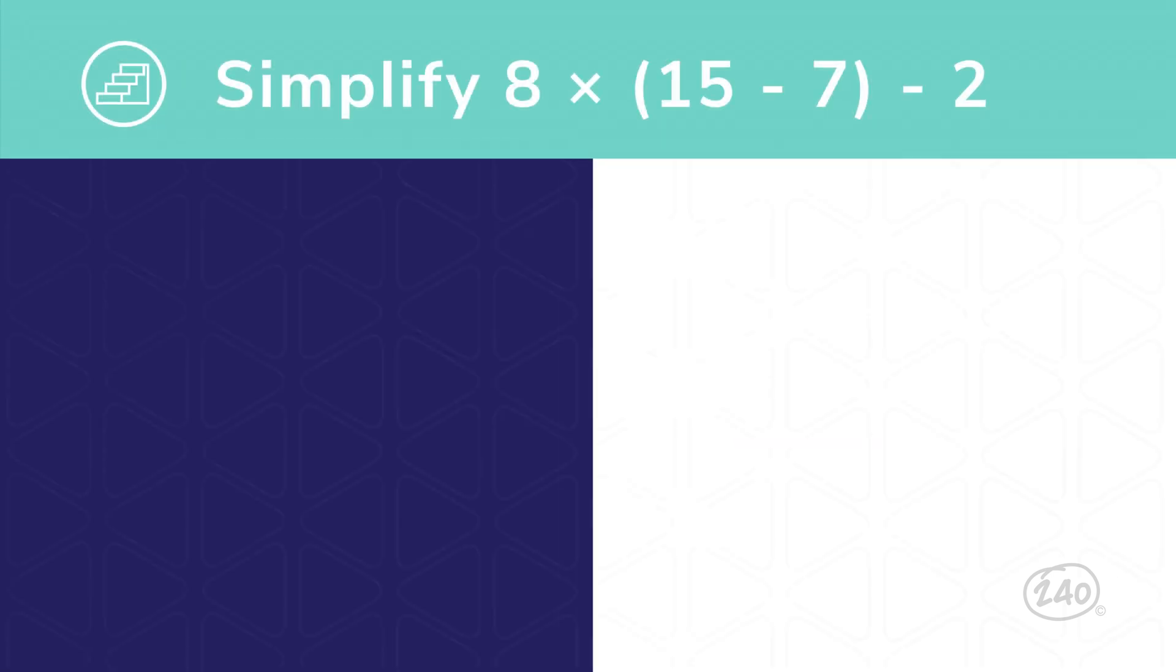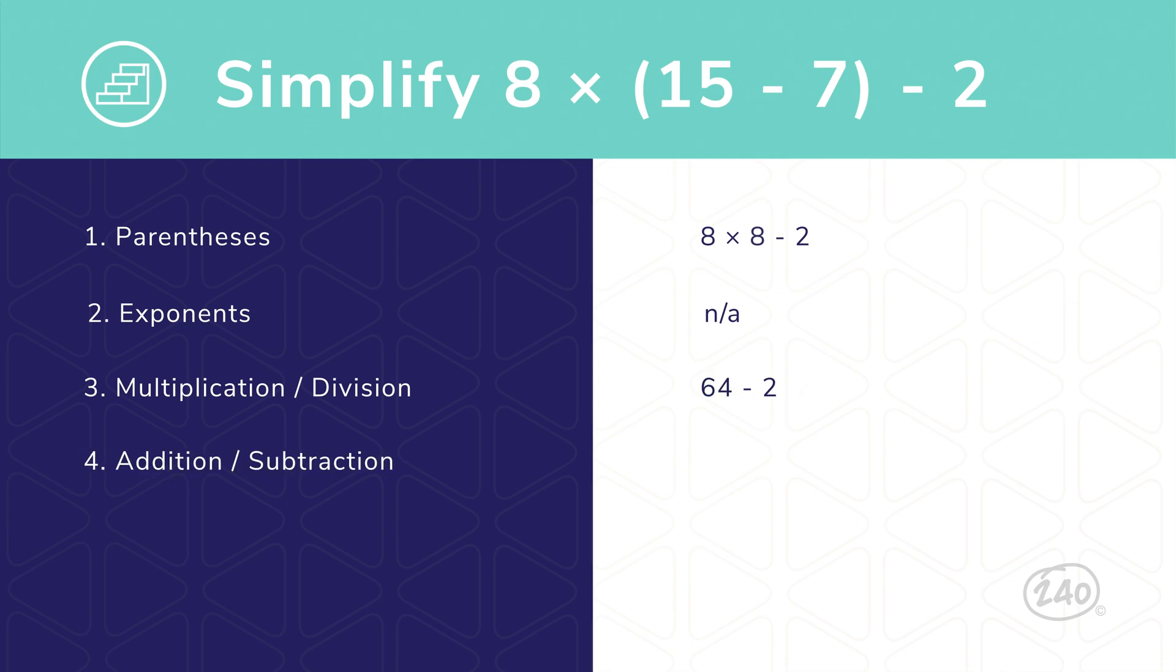Here's an example. Simplify 8 times (15 minus 7) minus 2. Since the P in PEMDAS stands for parentheses, we'll tackle parentheses first. 15 minus 7 equals 8, which leaves us with 8 times 8 minus 2. Moving on to E. There are no exponents, so no worries there. Now multiplication, where we multiply those eights to equal sixty-four. And finally, we tackle subtraction. 64 minus 2. That leaves us with our answer of 62.